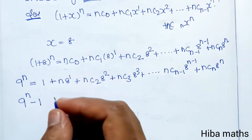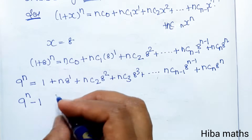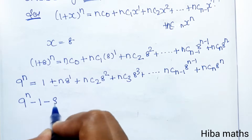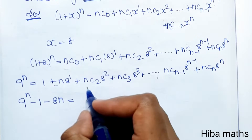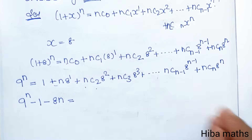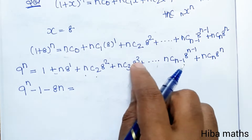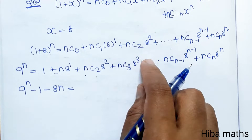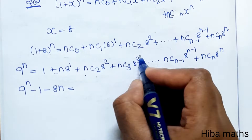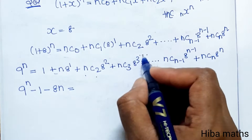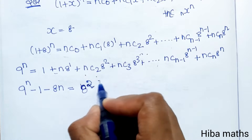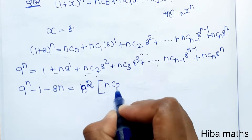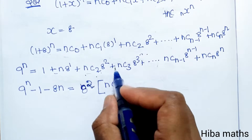Rearranging, 9 power n minus 8n minus 1 equals nC2 times 8 power 2 plus higher order terms.